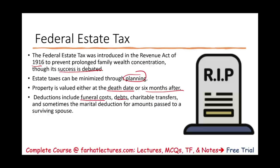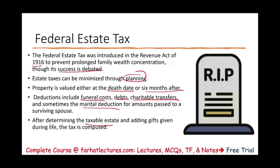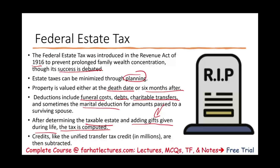You can deduct funeral costs, charitable transfers, and the marital deduction for amounts passed to a surviving spouse. If a husband and wife transfer everything between them, there are no taxes. But if they pass property to their kids, then taxes apply. After determining the taxable estate and adding gifts given during life, the tax is computed. The government provides a large unified transfer credit in the millions, subtracted from the estate. Whatever remains after the credit is the taxable amount — again, only applies to people with multi-million dollar estates.